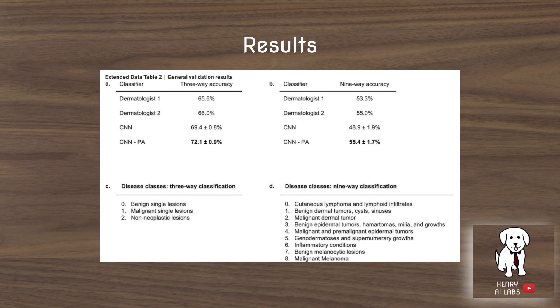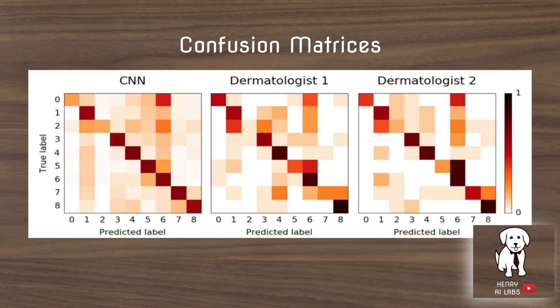These are the results from the CNN compared to the dermatologist. The CNN outperforms the dermatologist by a good margin on the three-way classification task, where you predict the high-level nodes by traversing up from the leaf nodes, but when predicting at the leaf nodes it performs the same as the dermatologist. The confusion matrices for the nine-way classification problem are interesting because the dermatologist and the CNN have some similar biases in their mispredictions — predicting class six when it's really class zero is a common trend amongst the CNN, dermatologist one, and dermatologist two.